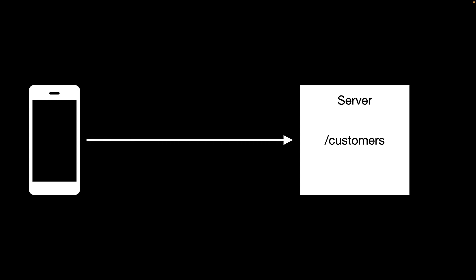Let's look at a simple example. We have a client — an iPhone application — and a server with one route called customers. When the client makes a request, if we have a middleware, before that request actually reaches the customers action or route, it is going to pass through middleware or a series of middlewares.